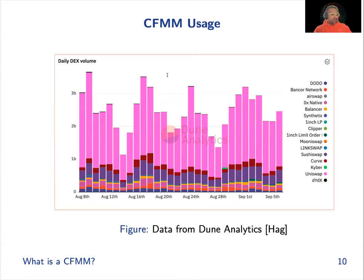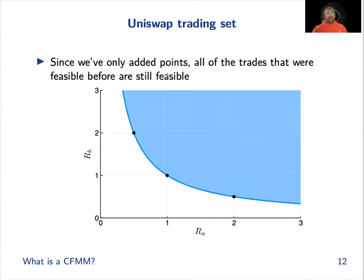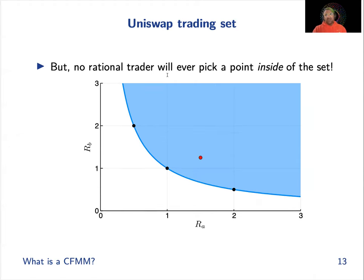This is not just a theoretical construct — the data shows there are billions of dollars of volume on these exchanges right now. Looking at what the trading set looks like for the constant product, where R_A times R_B equals a constant, we get a hyperbola. The trading set, the epigraph, is all the points above and on the boundary — those are feasible trades that preserve the product constant. Points below are not feasible. No rational trader will ever pick a point inside because they will immediately be arbitraged and take a loss almost instantly.